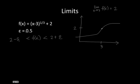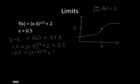And if we substitute what we know, we get 1.5 is less than (x-3) to the 1/3 plus 2 is less than 2 plus epsilon, which is equal to 2.5. If we subtract 2 from everything, we get negative 0.5 is less than (x-3) to the 1/3, which is less than 0.5.